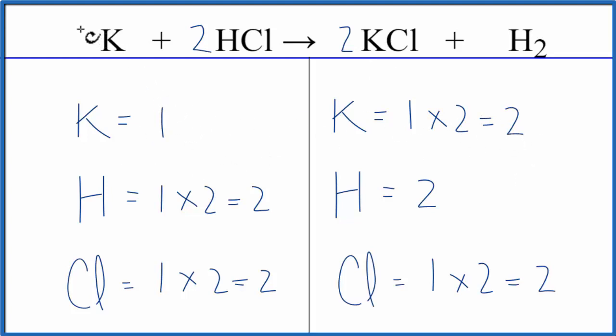But we can fix that pretty easy. If we just put a coefficient of two in front of the potassium, one times two equals two, and now everything's the same on both sides of this equation, and we're done. It's balanced.